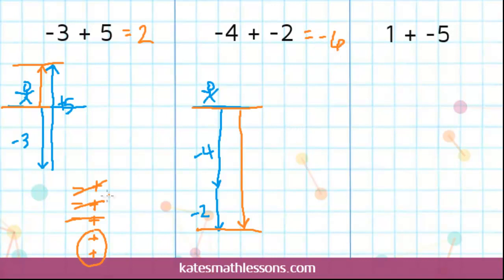If you want to draw positive and negative signs to represent this one, you started with 4 negatives: 1, 2, 3, 4. And you added 2 more negatives. When you have all negative signs, none of them cancel out. So if you look now, you have a total of 6 negatives. When you add negatives to negatives, you just end up with more negatives.